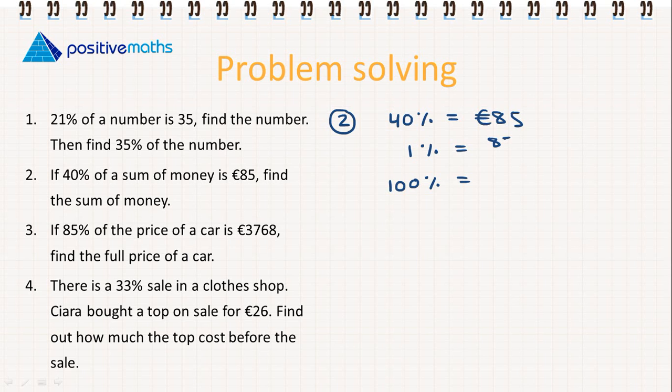1% is going to be 85 divided by 40, so we get 2.125. Then multiplied by 100, we're going to get 212.5.